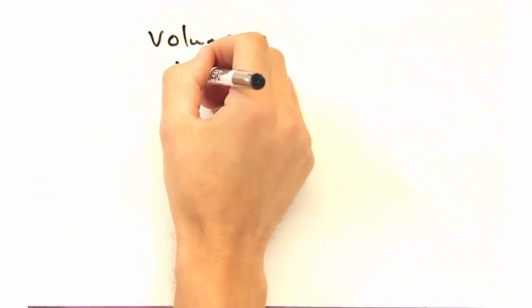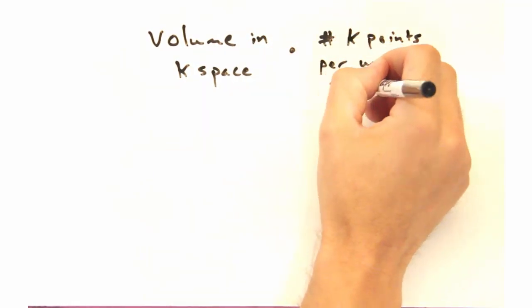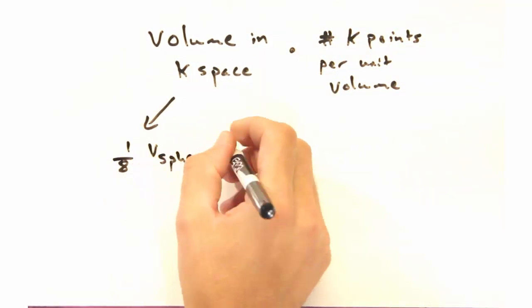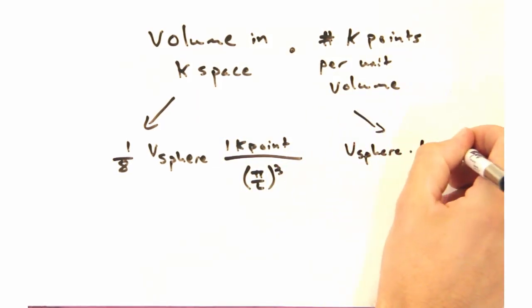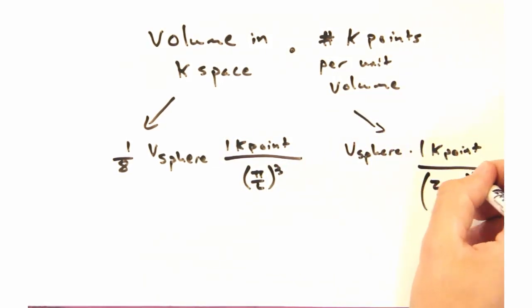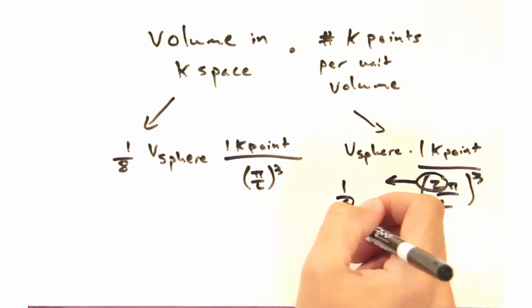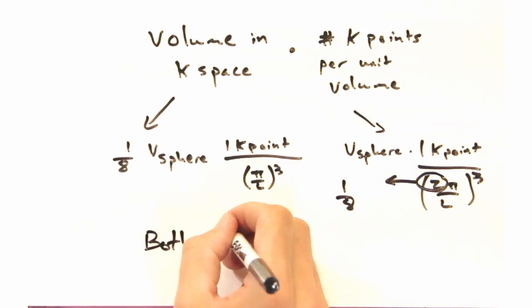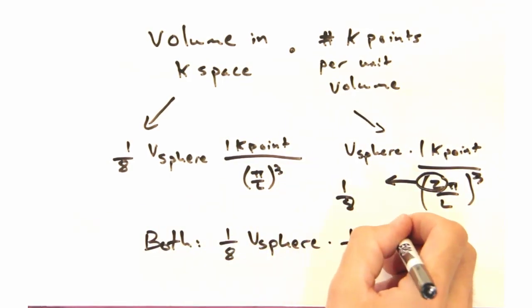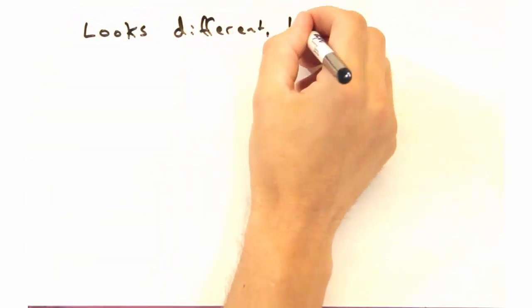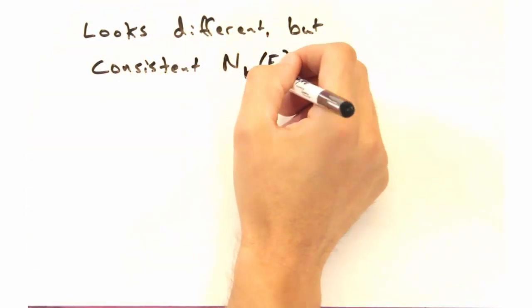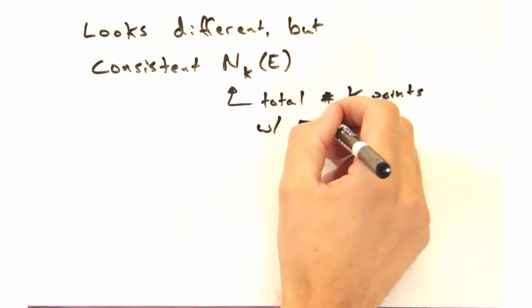The total points would just be the volume times the number of points per unit volume. For the fixed boundaries, we only have 1 eighth of the volume of the sphere with the spacing of pi over l. But for the periodic case, even though we use the whole sphere volume, the spacing is twice as big, and so when you cube it, you get the same 1 eighth factor out front. So while the k space looks different for the different approaches, they are consistent in terms of the number of electronic states.